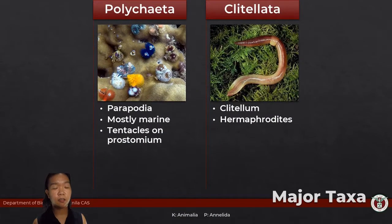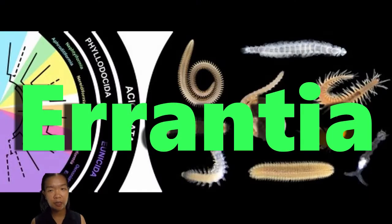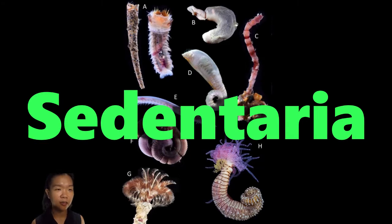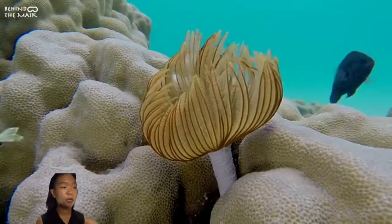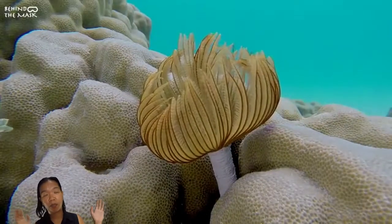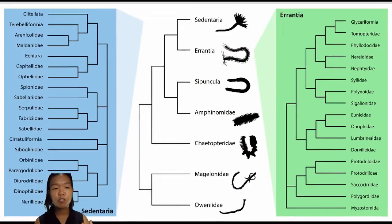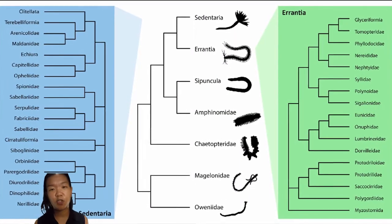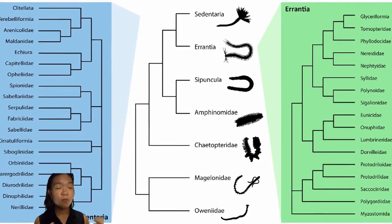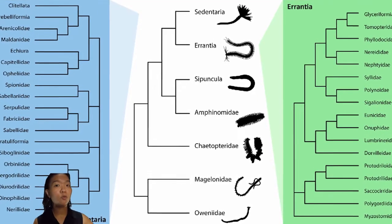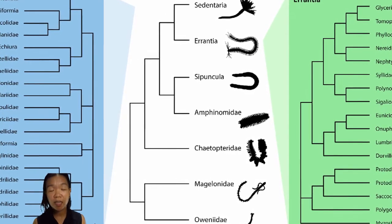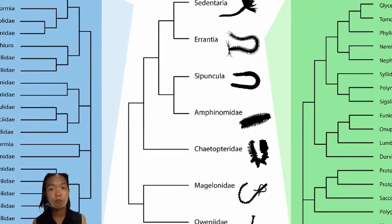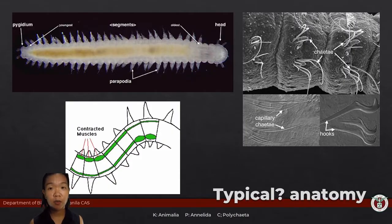Polychaetes are mainly divided into two groups: errant polychaetes (Errantia) — the ones that move around — and sedentary polychaetes (Sedentaria) — the ones that stay in one place, like couch potato worms. With the addition of molecular taxonomy, these groupings have changed. Lifestyle doesn't always say much about common ancestry. Scientists are still discovering more about worms and revising classifications.